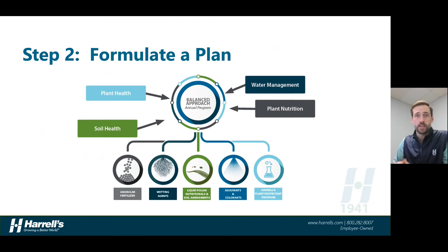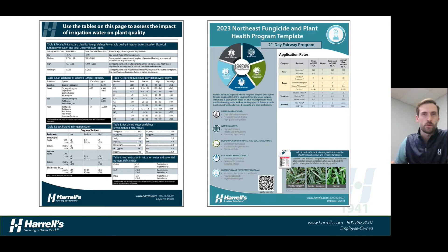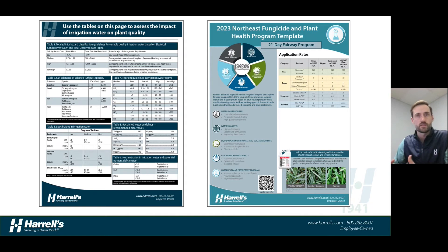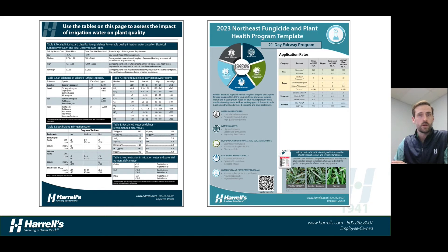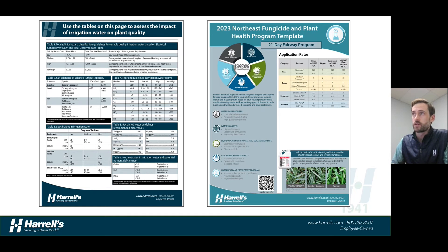We've taken the liberty to put together a few reference documents. You can take the information — whether it's a soil test, a water test, or knowledge of disease pressure considering your location — and it gives you a document of a place to start. What you're looking at here on your screen is an irrigation water suitability interpretation sheet. You can take that water test and compare it with the values on this table.